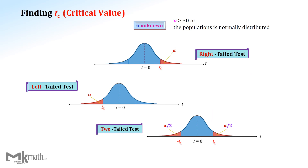In summary, we need to identify the significance level alpha and find the degrees of freedom to look up the t-table. Please make sure that the t-table gives only positive t-scores. Therefore, we need to switch positive t-scores to negative values for a left-tailed test, and must have both negative and positive values for a two-tailed test. Thank you for watching and see you next time.